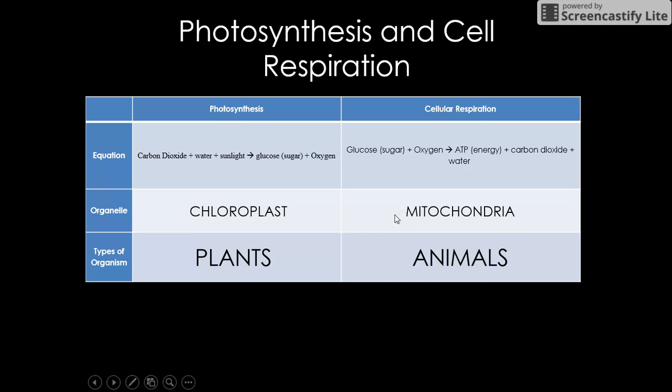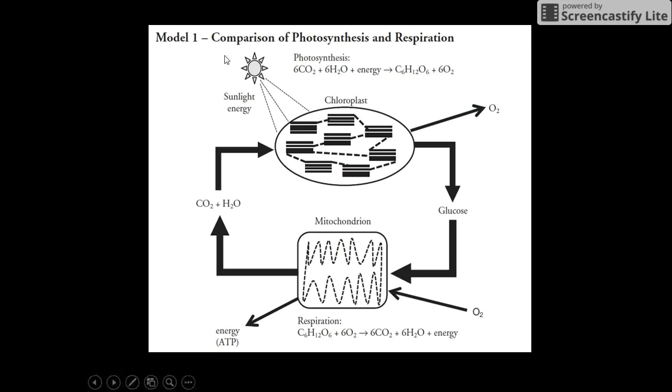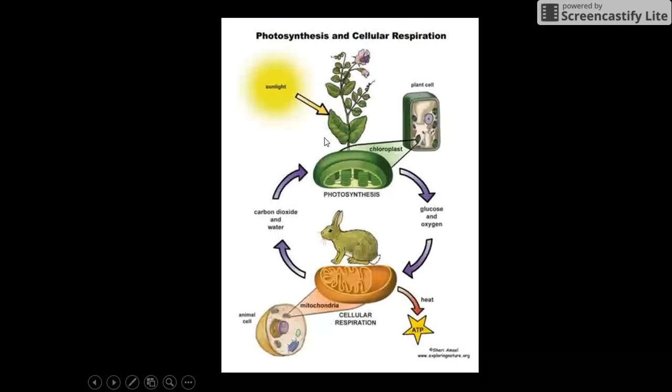Organelles for cell respiration are mitochondria, which are mainly in animals but they are also in plants. Mitochondria is in everything. This is also another model of photosynthesis just to show that we have our chloroplast spitting out our glucose, our sugar and our oxygen, and our mitochondria taking that in to generate our ATP, our energy. It spits out carbon dioxide and water and sends it back over here. You also have this picture in your notes as well.